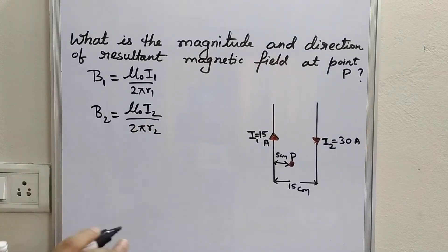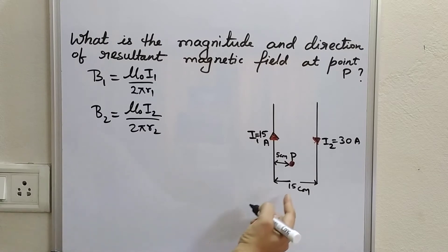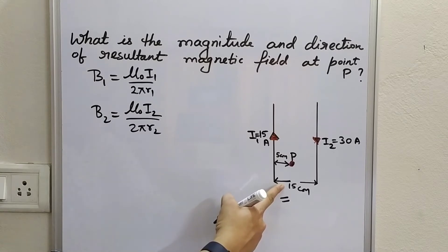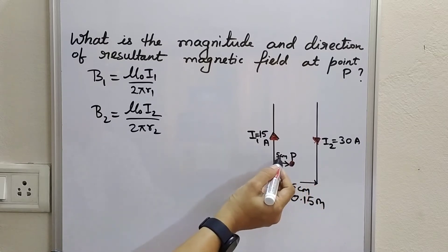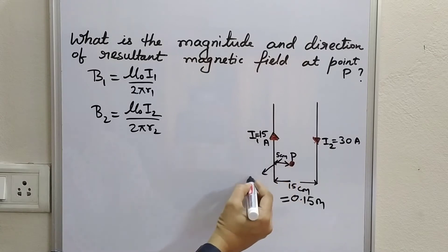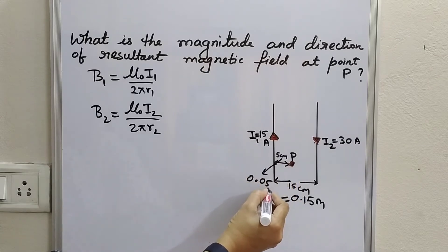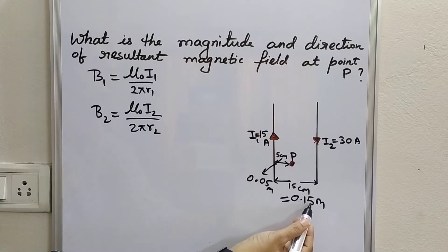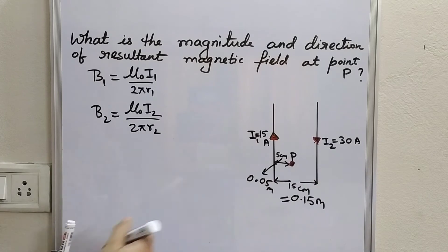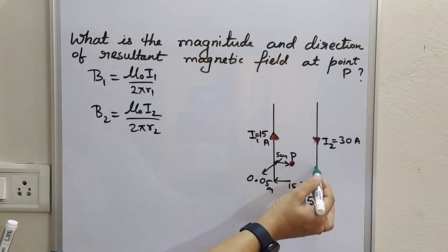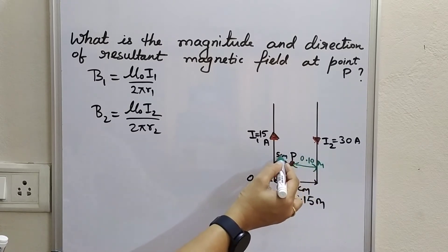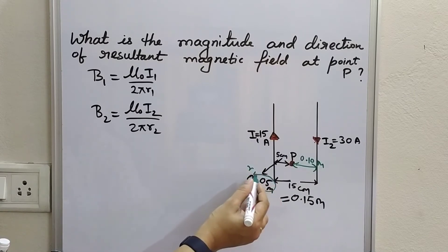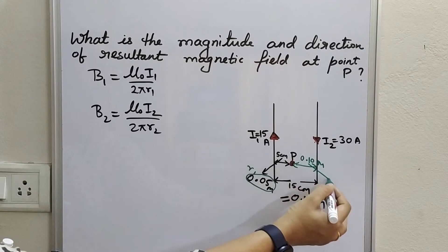Before substituting the values, let us convert everything to SI units. 15 centimeters divided by 100 gives 0.15 meters. 5 centimeters is 0.05 meters. Subtracting 0.05 from 0.15, the distance of point P from the second conductor is 0.10 meters. So R1 = 0.05 m and R2 = 0.10 m.